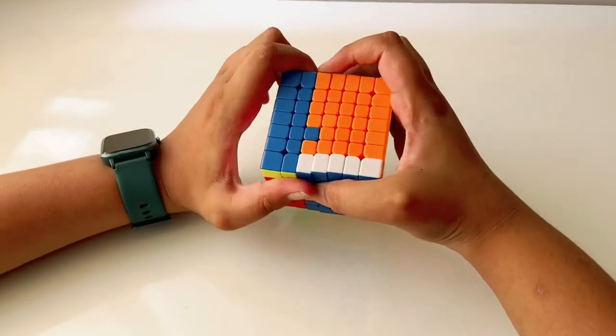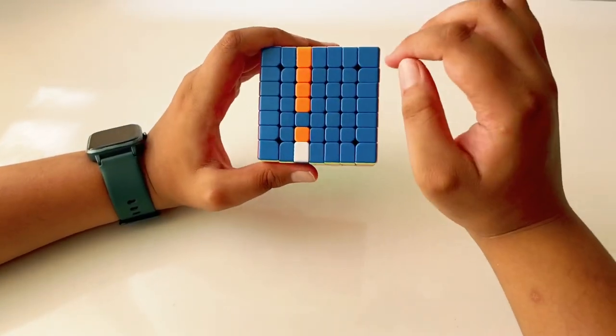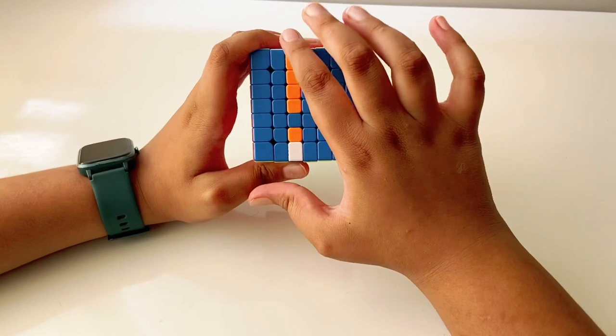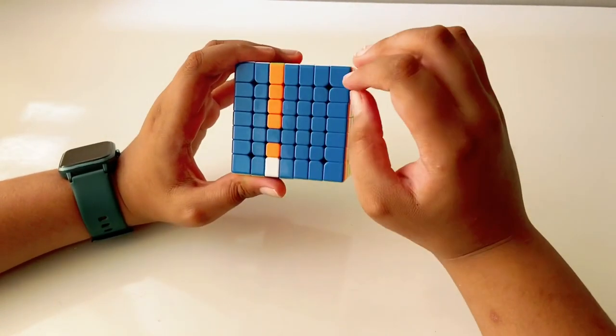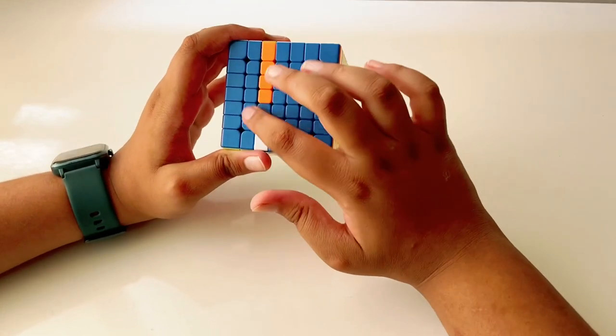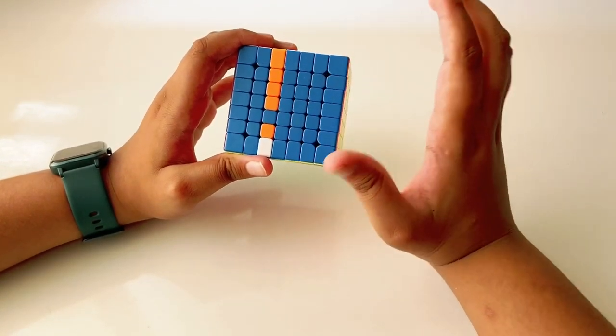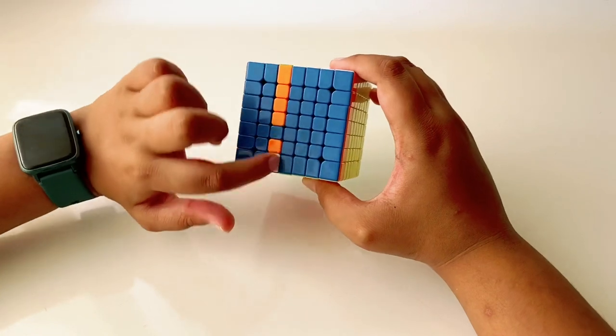As you can see, we have moved the layer down on our left side. So this time we'll do the F move on the right, so that basically we take this on the right like that.